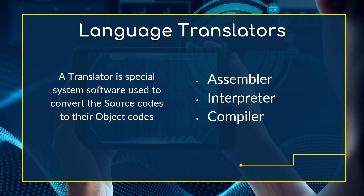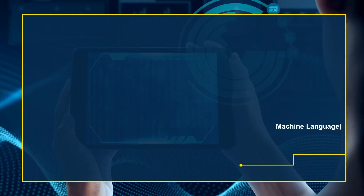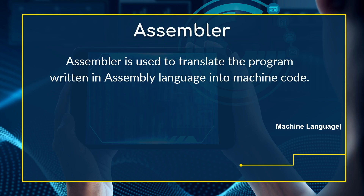All three ultimately help to convert source code into object code. Let's understand how each does the translation. An assembler is used to translate the program written in assembly language into machine code. There are languages normally written in low-level language still in close relation to what the computer understands, but not directly. So to convert assembly language into object code — binary that the computer understands — we need an assembler.